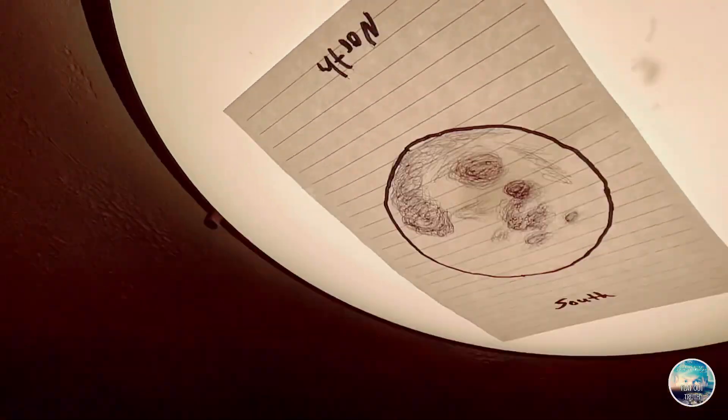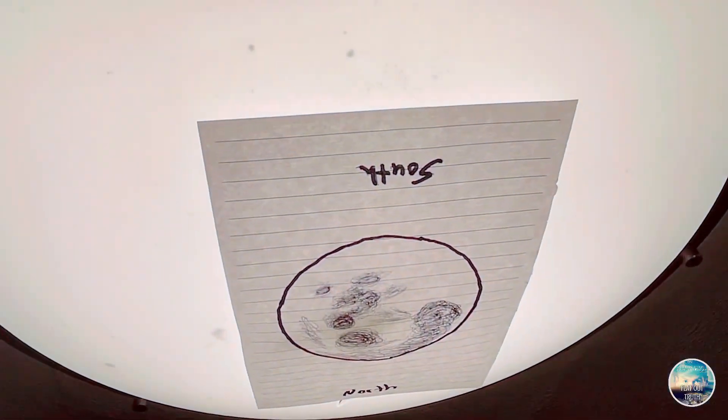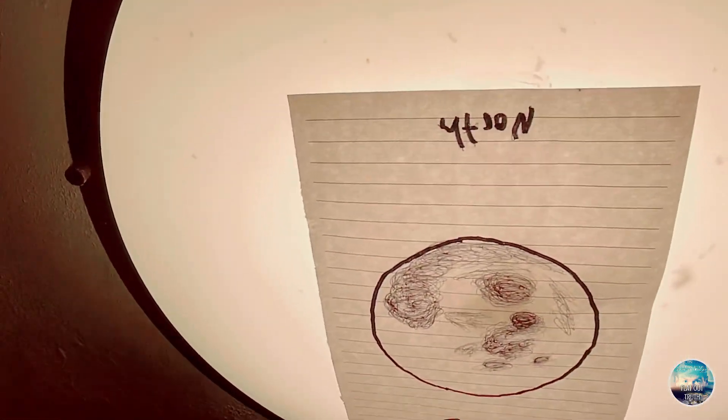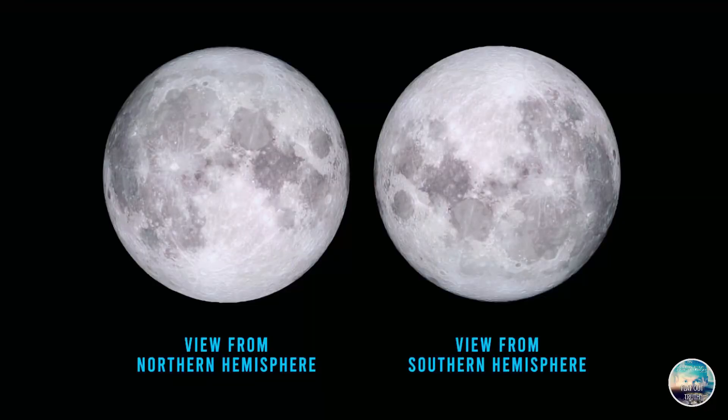Let me show you just like I did with the belt of Orion, so you know it's not camera tricks. Here's the face of the moon from North America, and when we go to South America it's upside down. It's really really simple. As you can see, I just proved you do not have to have a sphere to see it in the opposite direction. Anyway, thanks for watching everyone, have a good night and God bless.